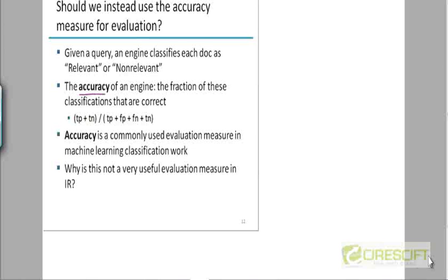Even if one search engine returns the thousand most relevant documents and another returns none, in terms of the value of the fraction it's not going to work. Accuracy may work for classification systems and is generally used to measure machine learning classification performance, but not in the context of information retrieval.